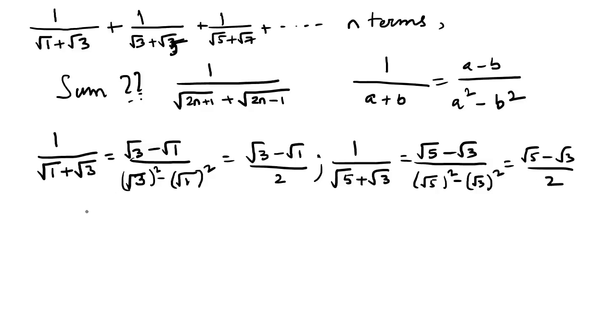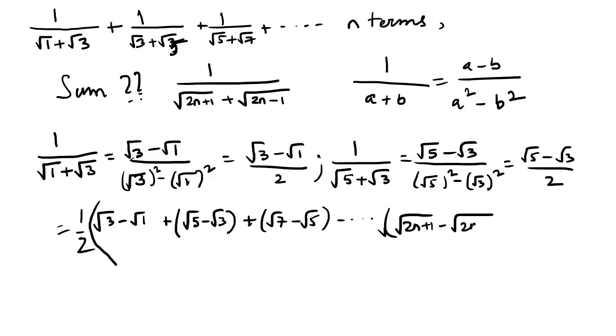So if you do this for each term, we will get something like this: 1 by 2, if I take common because I will get half in all cases, times root 3 minus root 1 plus root 5 minus root 3 plus root 7 minus root 5, and so on, up till root 2n plus 1 minus root 2n minus 1.